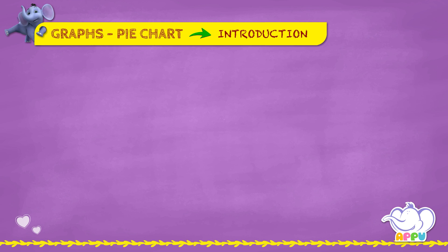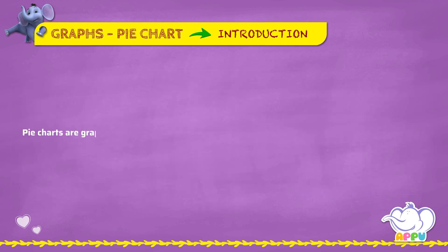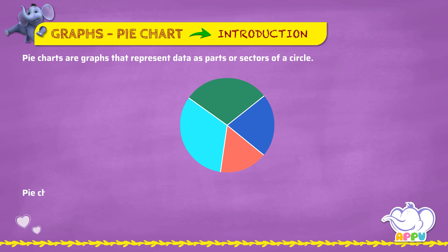Introduction: We had learned about data representation in the form of picture graphs, bar graphs, and line graphs. Pie charts are graphs that represent data as parts or sectors of a circle. It is called a pie chart because its parts look like slices of a pie. Pie chart is also known as circle chart or circle graph.